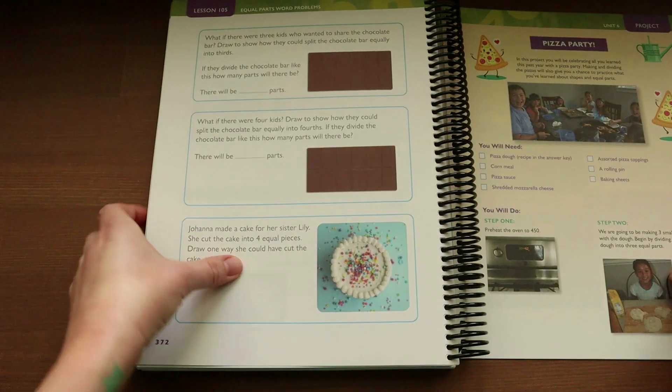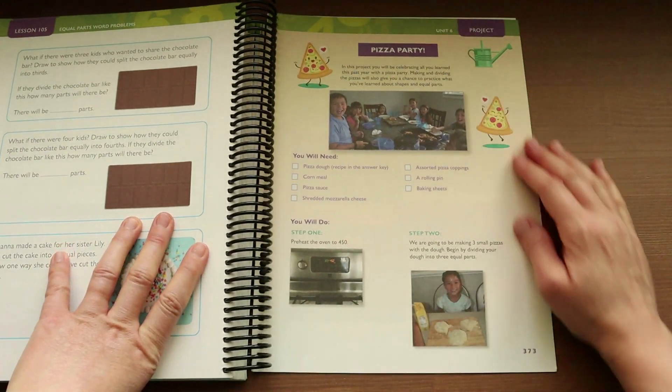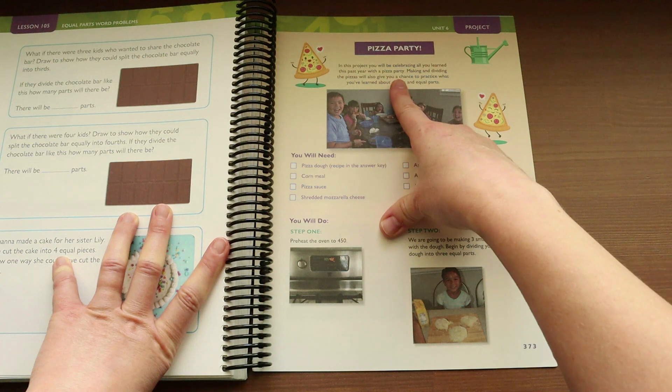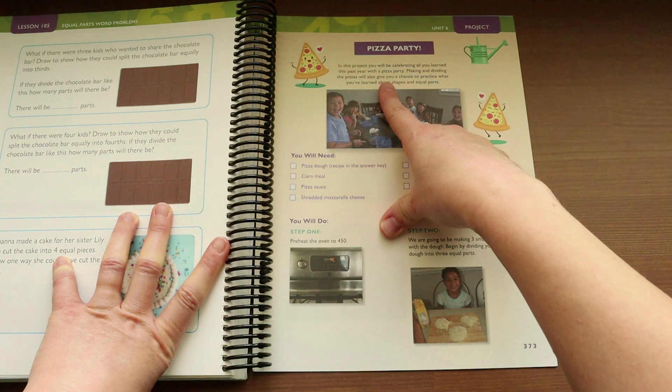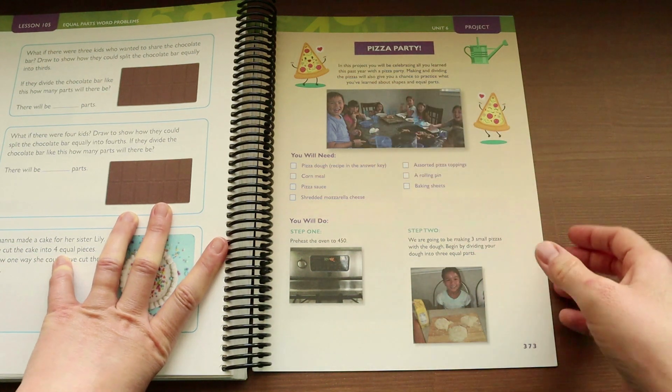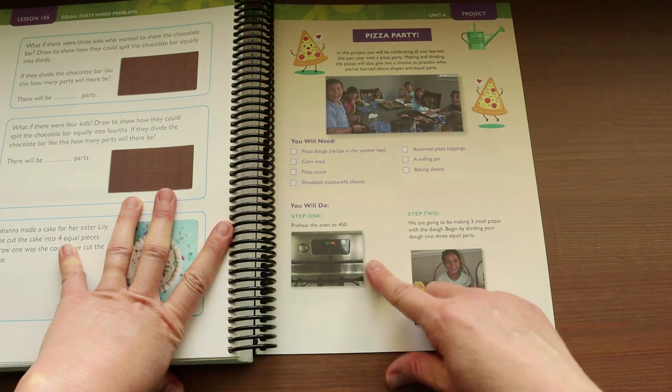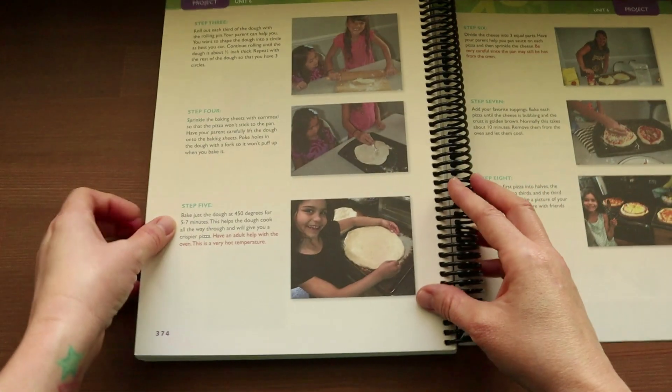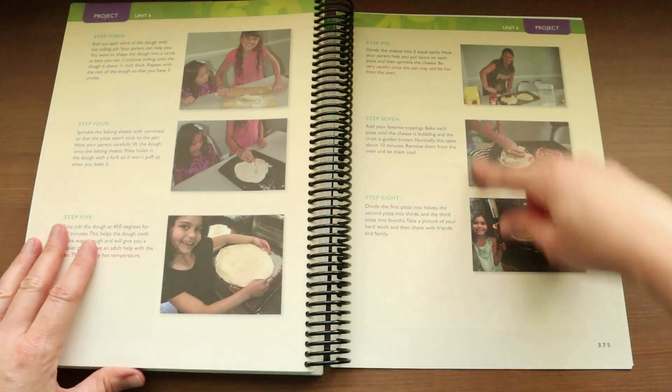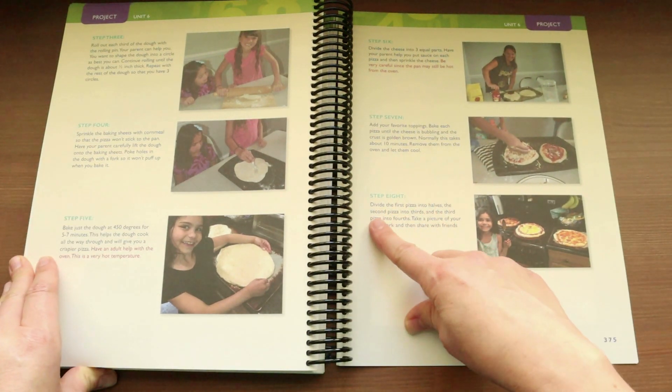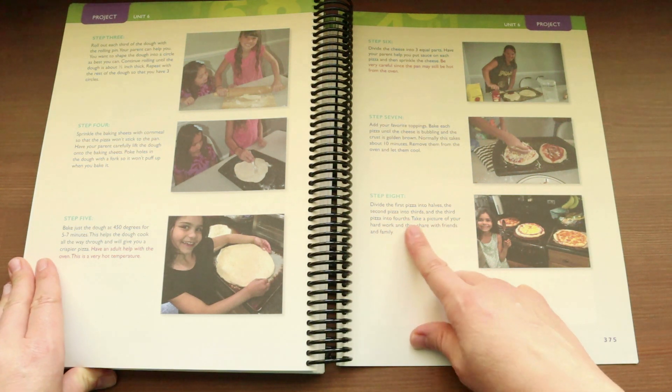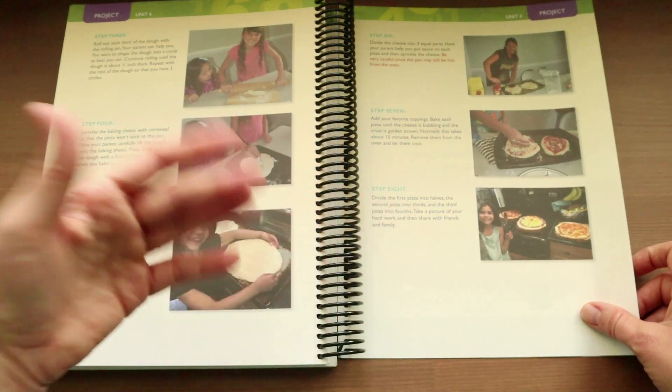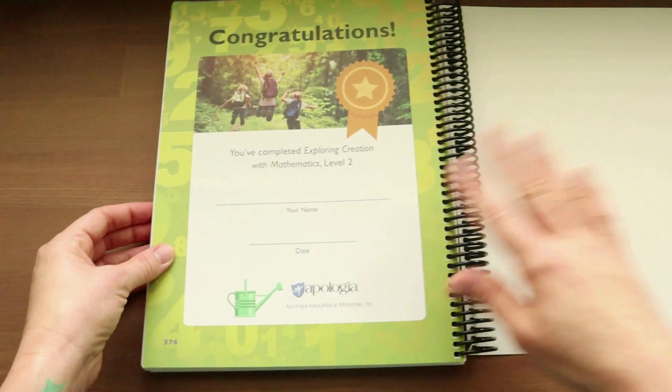As far as a project goes, their final project will be a pizza party, which I think is a really fun idea for kids this age. In this project, you will be celebrating all you learned in the past year with a pizza party. Making and dividing the pizza will also give you a chance to practice what you learned about shapes in equal parts. The first step is they're going to preheat the oven. Then they will be dividing the dough between three equal parts. They'll basically continue making it and following the directions. Then divide the first pizza into halves, the second pizza into thirds, and then the third pizza into fourths. I think that's going to be really fun. It'll give them a visual on dividing these things. Kids love pizza. So I think it's a really fun idea.